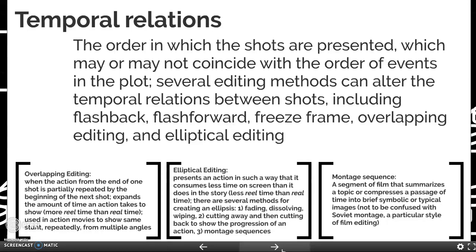Different editing methods can be used to alter temporal relations between shots. These include flashback, flashforward, and freeze frame, which you're probably already familiar with. Flashback is when we move back in time to something that happened earlier. Flashforward is when we move ahead in time to something that hasn't yet happened. And freeze frame is where you freeze what's happening in the frame so that you can focus on it for a little while.